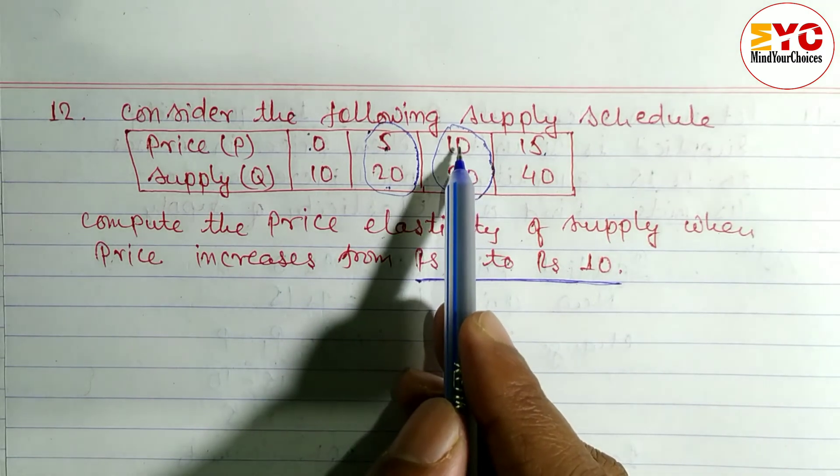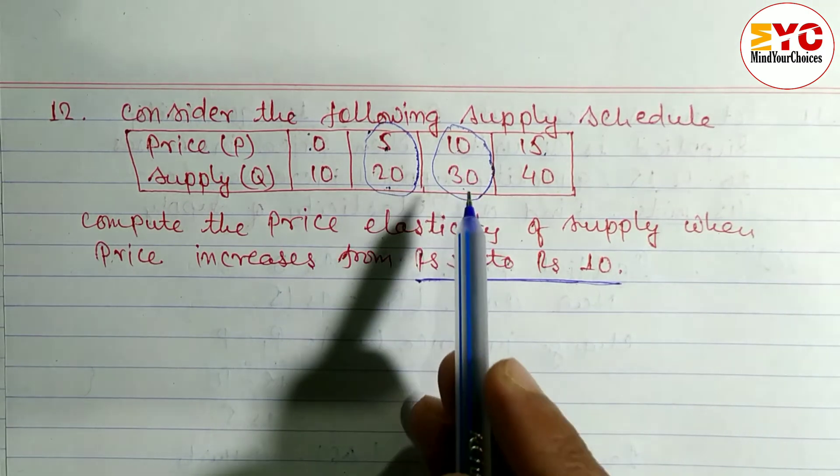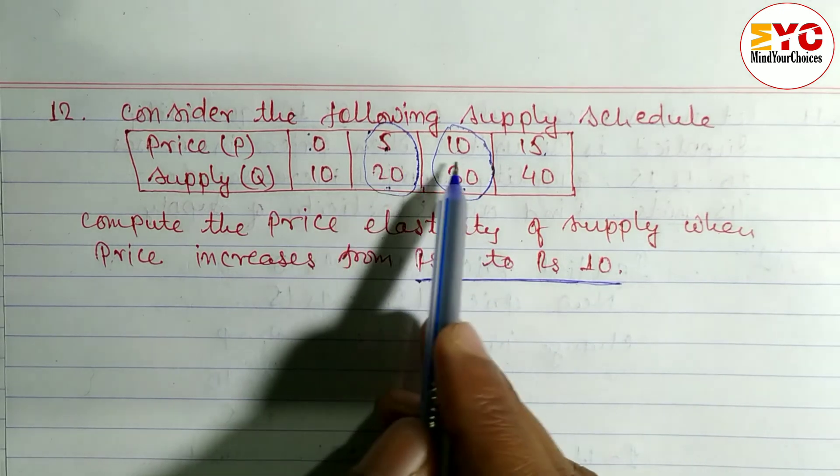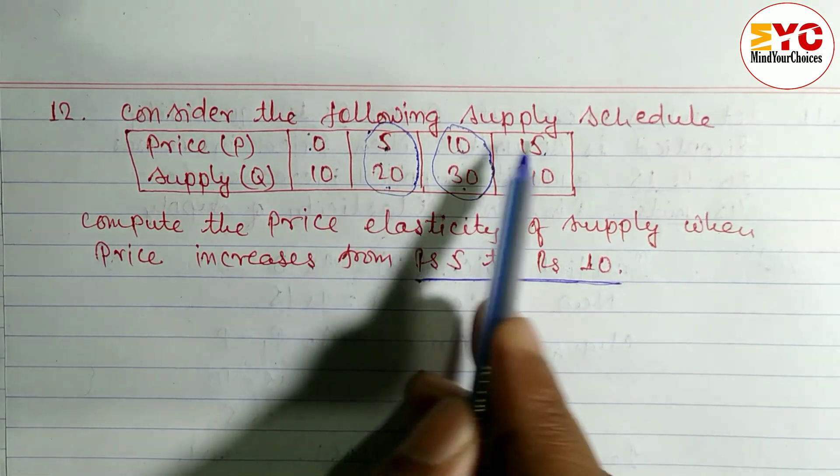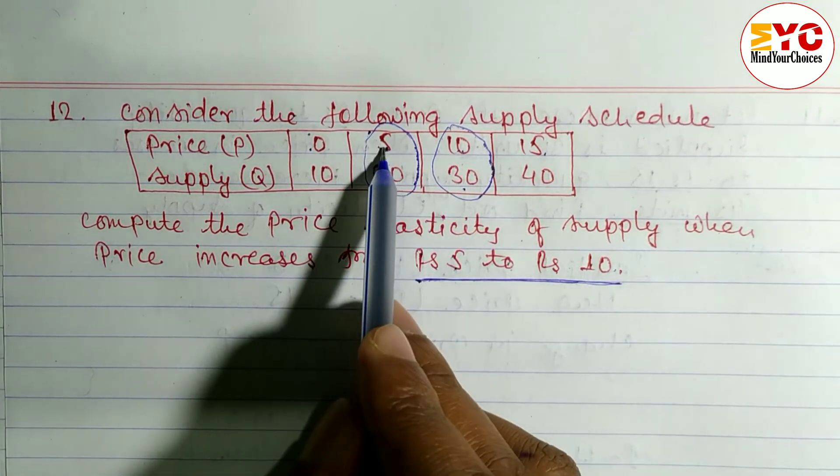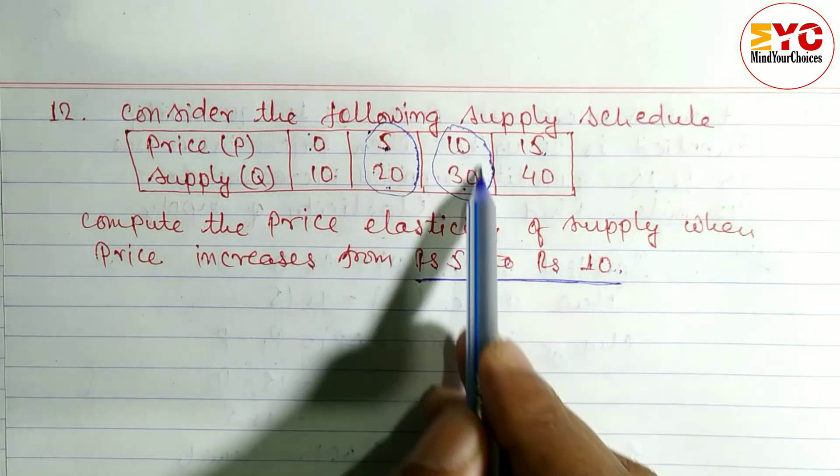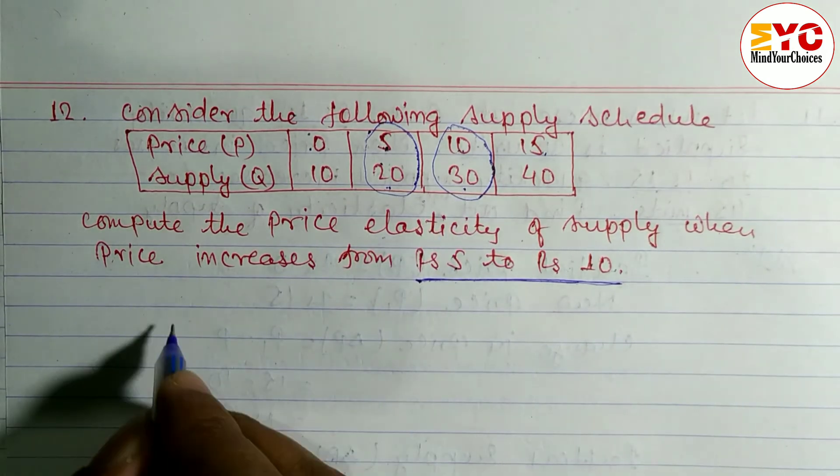Only these two we have to look at because here 5 to 10 means 5 and 10 we have to look at. If 5 to 15, then we have to look at 5 and 15. We have to ignore the 10. So let's start.